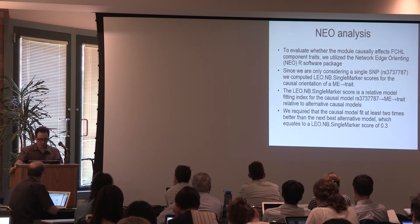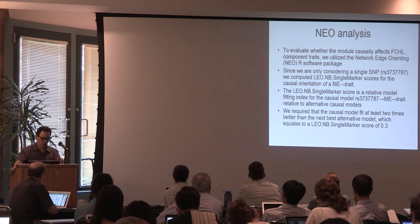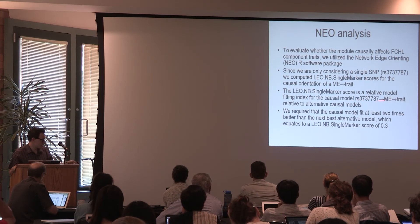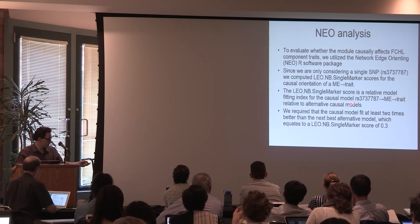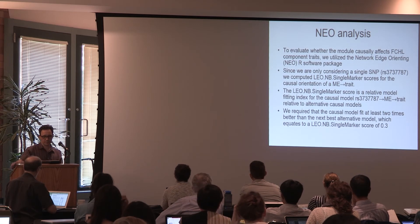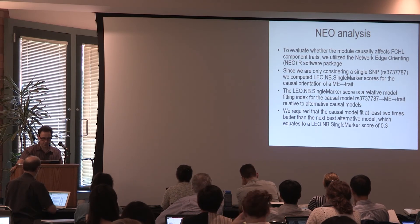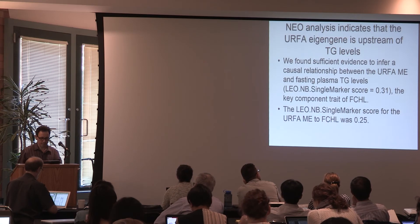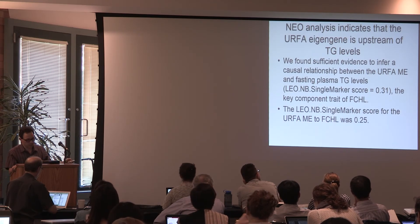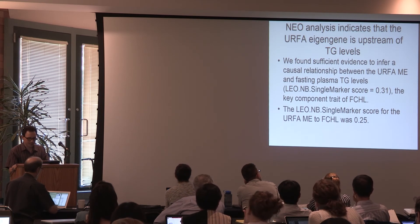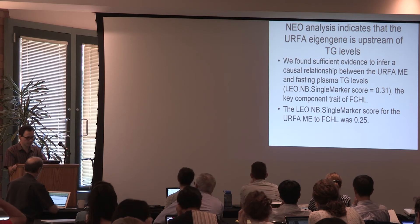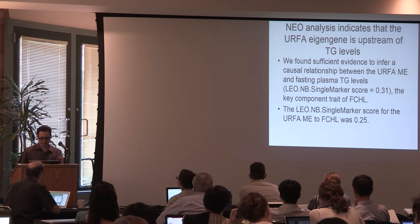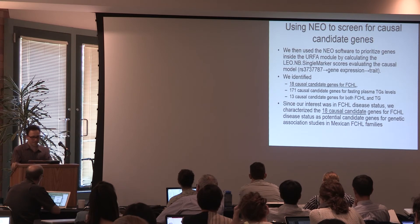The fact that this SNP relates to pretty much most module genes really allows you to prioritize the genes. The very first analysis that we did was to relate the module eigen gene to the trait. We have this SNP and we want to test whether the module eigen gene mediates the effect of the SNP on the trait. The evidence for that was rather weak. We got a LEO score of 0.31. Truth be told, it's only suggestive, but still, it at least indicates that there's some causal signal.